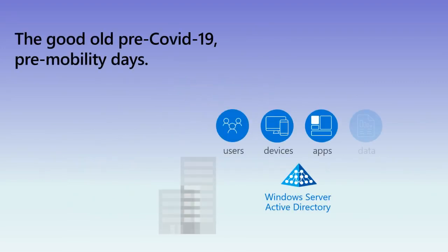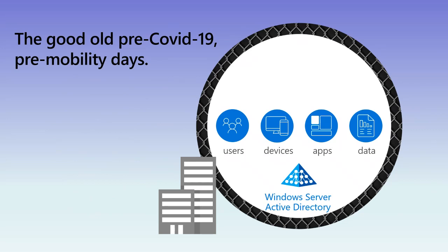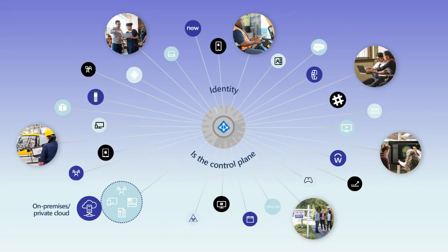We're now in a world of mobility. We're no longer in the good old pre-COVID-19 pre-mobility days. In the old days, you had a Windows Server Active Directory; you had your users, devices, apps and data protected by your physical boundaries and by your virtual and security boundaries with firewalls and proxies and all the things you would have to protect your environment. The picture today is more like this — rather than having your control plane in your network, we now have to use identity as the control plane for all of our security, whether it be internal or external, which gives us a number of security goals.